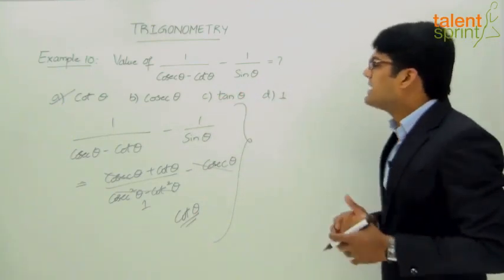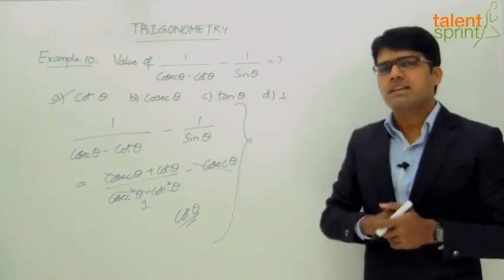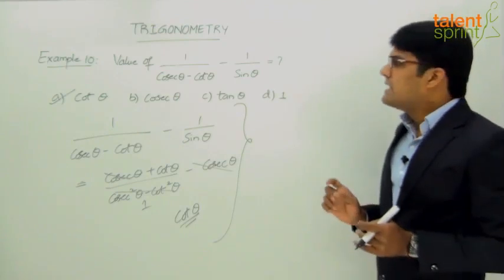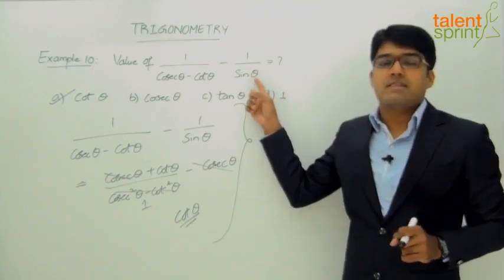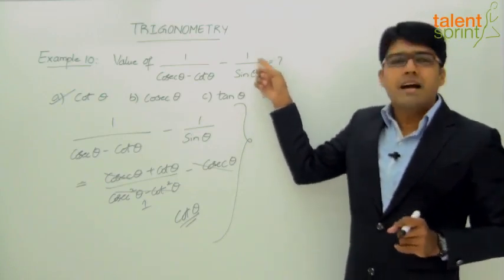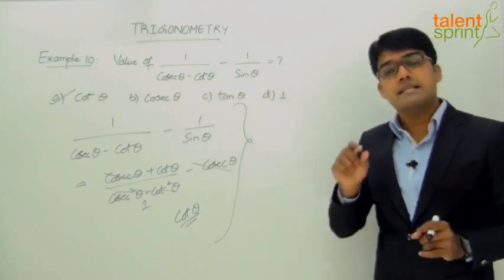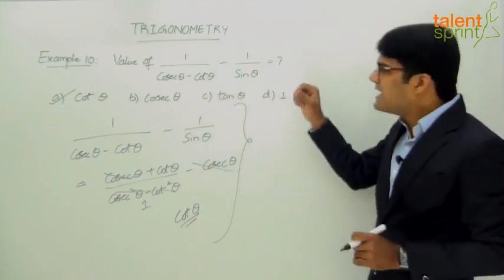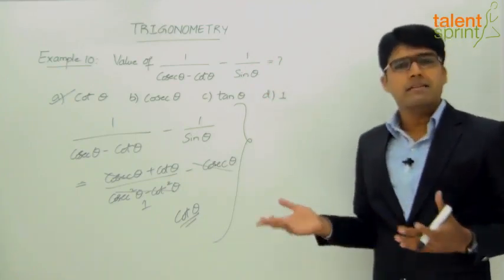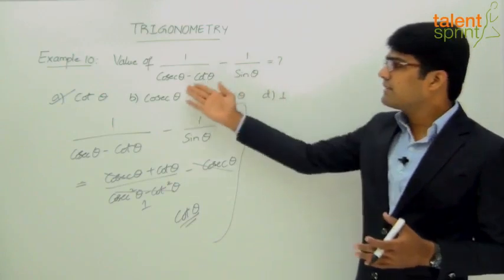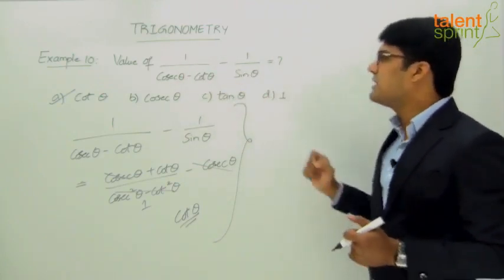Let us try with theta equals 0 degrees. The moment theta is 0, sine theta becomes 0, making 1 by sine theta undefined — so there is no point trying with 0. We should take a value of theta that gives a real numerical result. We can try with 30 degrees, since we know all the trigonometric ratios for theta equals 30. Let us substitute theta as 30.